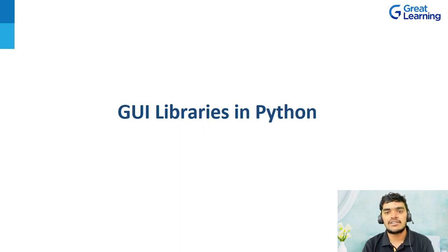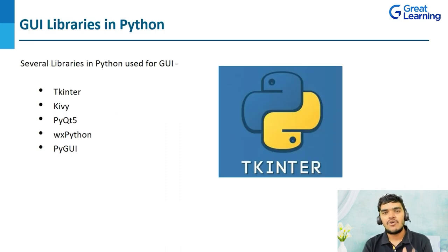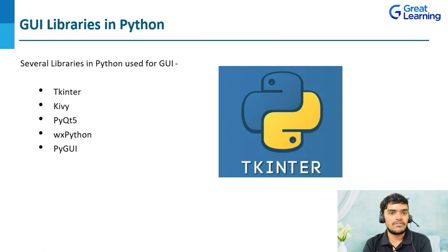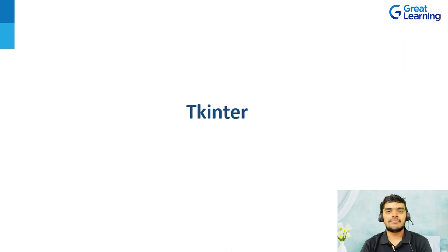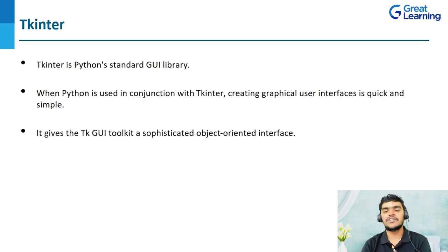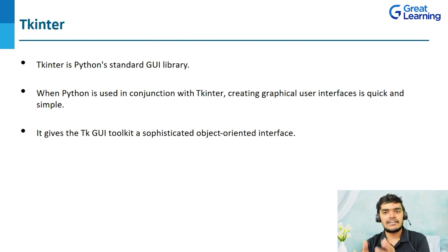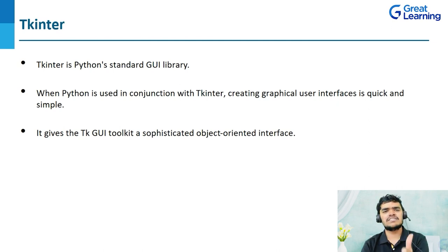Python provides several GUI libraries. We will be starting with Python Tkinter, and there are several more libraries such as Kivy, PyQt5, WX Python, and PyGUI. Tkinter is the Python standard GUI library. When Python is used in conjunction with Tkinter, we are able to create graphical user interfaces quickly and simply. Tkinter provides the Tk GUI toolkit — a sophisticated object-oriented interface.